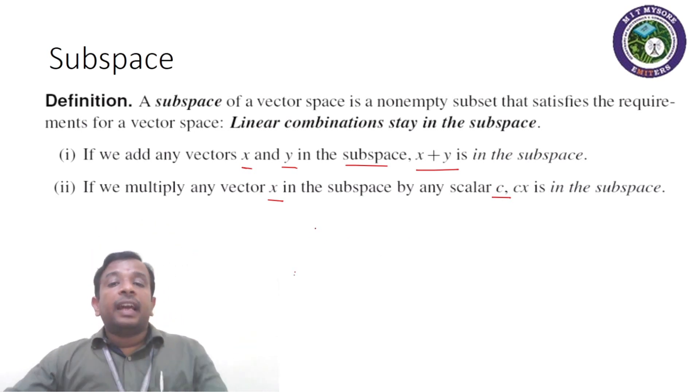To understand this, let us consider an example. If we consider M2 cross 2 space, which is a vector space.